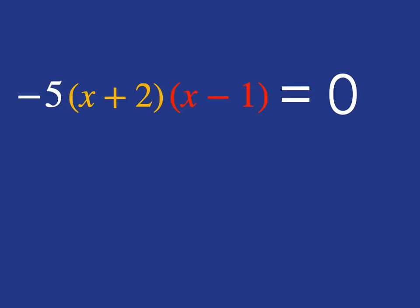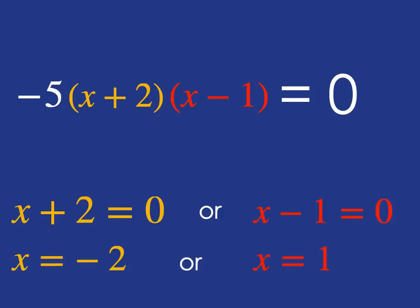You can't do anything with the minus five because that's a constant, right? It doesn't have a variable, so you can't make it change. It just stays minus five the whole time. So again, this is no different to the last one. The only way that you can get this equation being zero is if x plus two is zero or if x minus one is zero, which will then give you x is minus two or x is one.